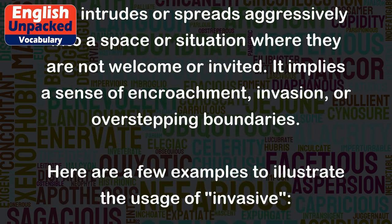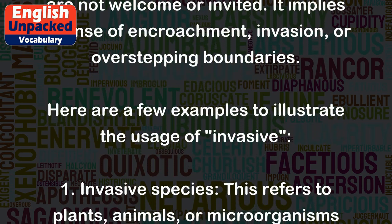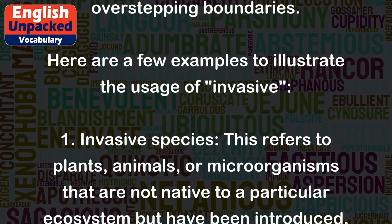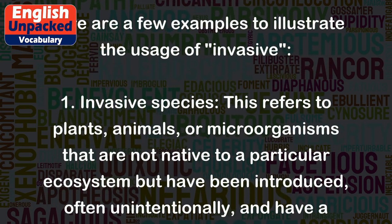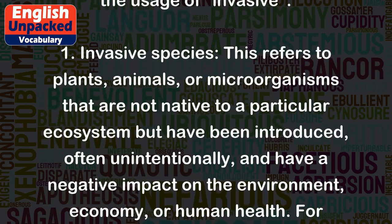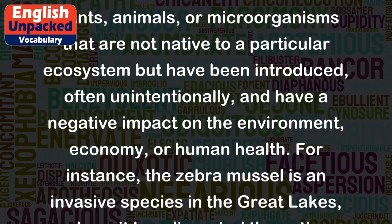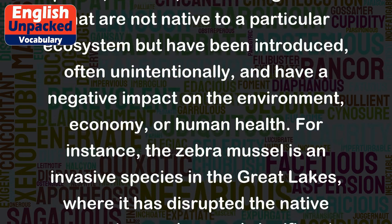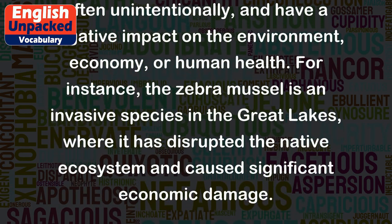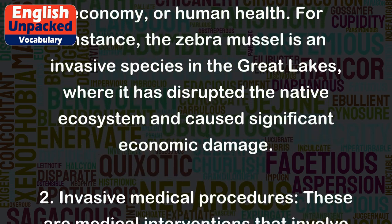Here are a few examples to illustrate the usage of invasive. First, invasive species – this refers to plants, animals, or microorganisms that are not native to a particular ecosystem but have been introduced, often unintentionally, and have a negative impact on the environment, economy, or human health. For instance, the zebra mussel is an invasive species in the Great Lakes, where it has disrupted the native ecosystem and caused significant economic damage.